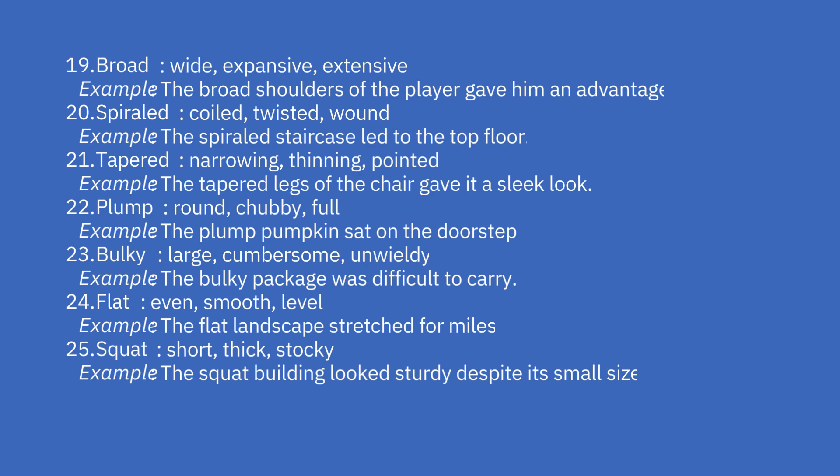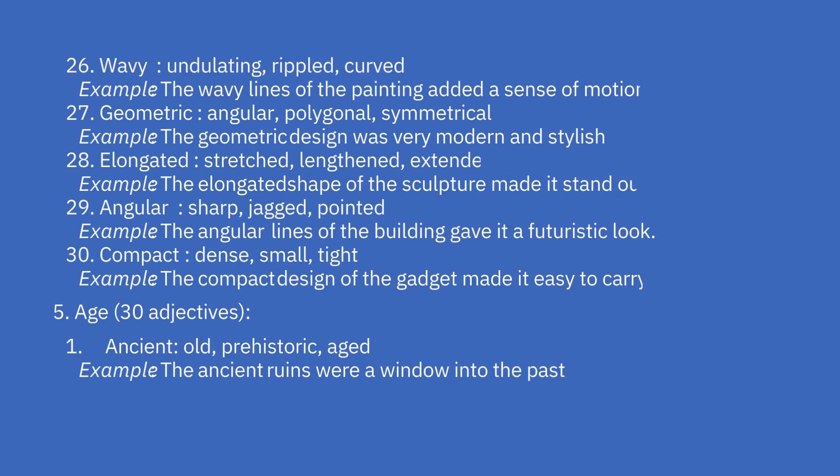24th: flat — even, smooth, level. Example: the flat landscape stretched for miles. 25th: squat — short, thick, stocky. Example: the squat building looked sturdy despite its small size. 26th: wavy — undulating, rippled, curved. Example: the wavy lines of the painting added a sense of motion. 27th: geometric — angular, polygonal, symmetrical. Example: the geometric design was very modern and stylish.